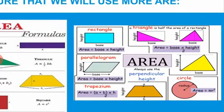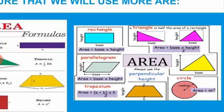In the area formulas, the height is always perpendicular. We also note that the area of a circle is pi times r squared, where r is the radius and pi equals 3.14 or 22/7.